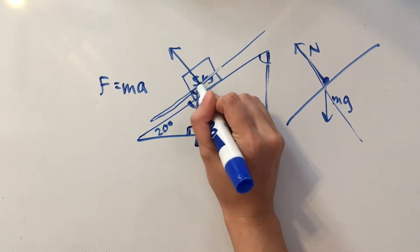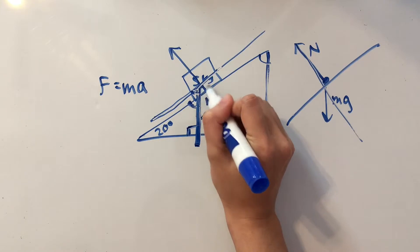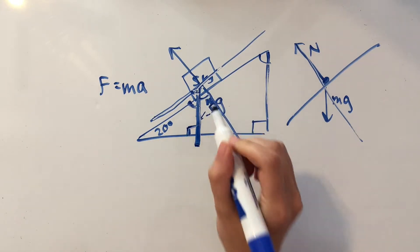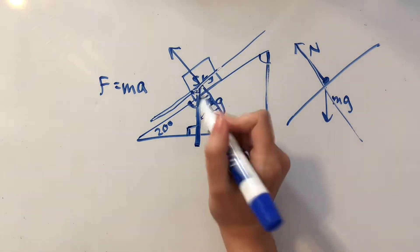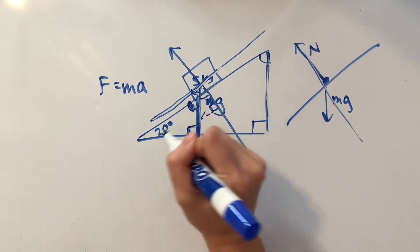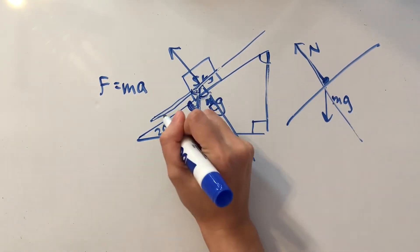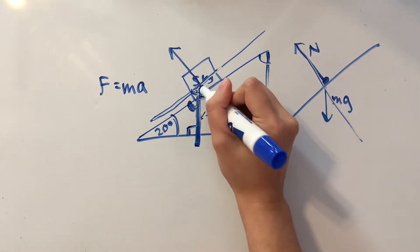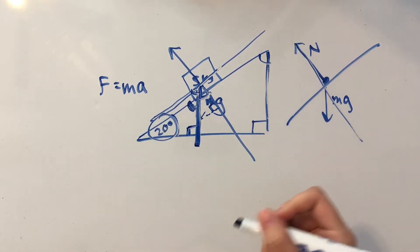We also have here that since these two axes are perpendicular, this angle plus this angle has to add up to 90 degrees as well. So since these two angles are the same, then that means these two angles must also be the same. So this angle right here is going to be 20 degrees.